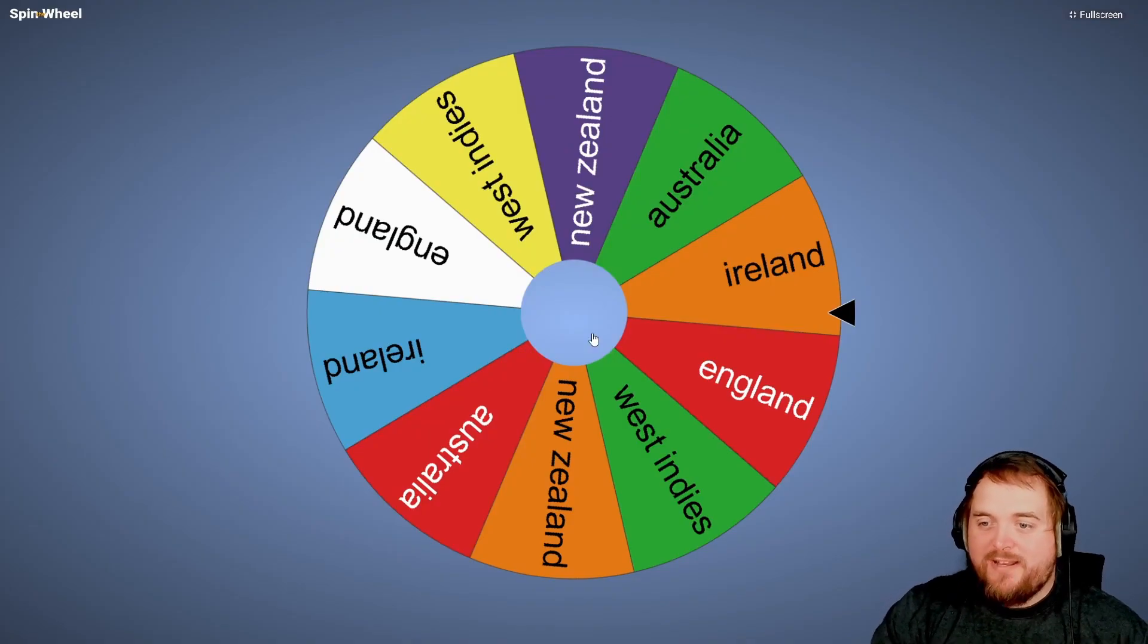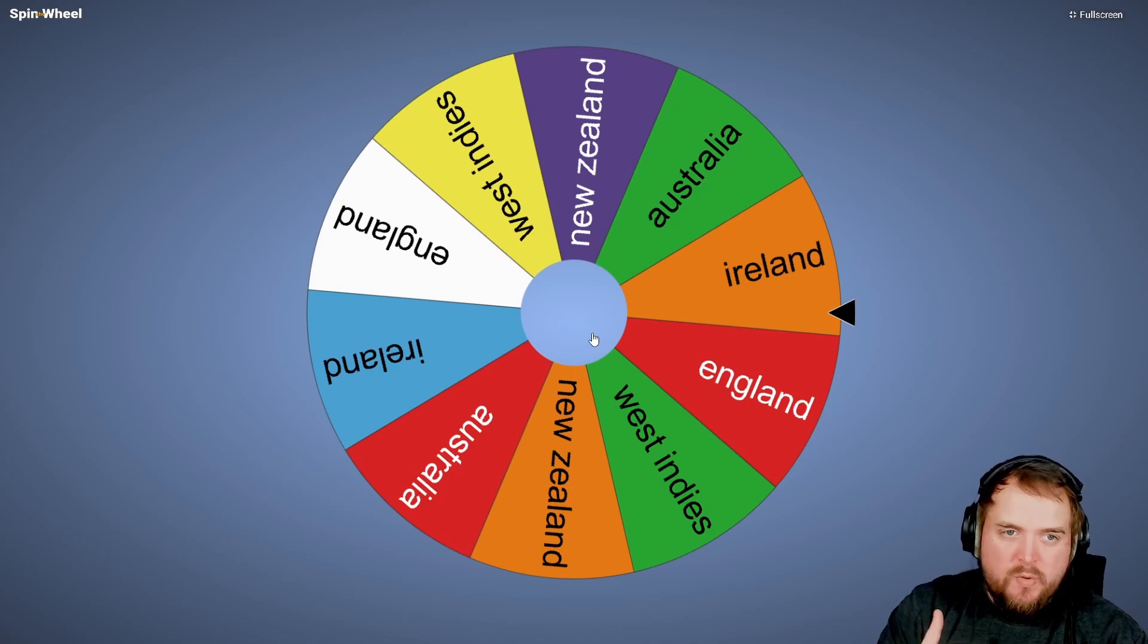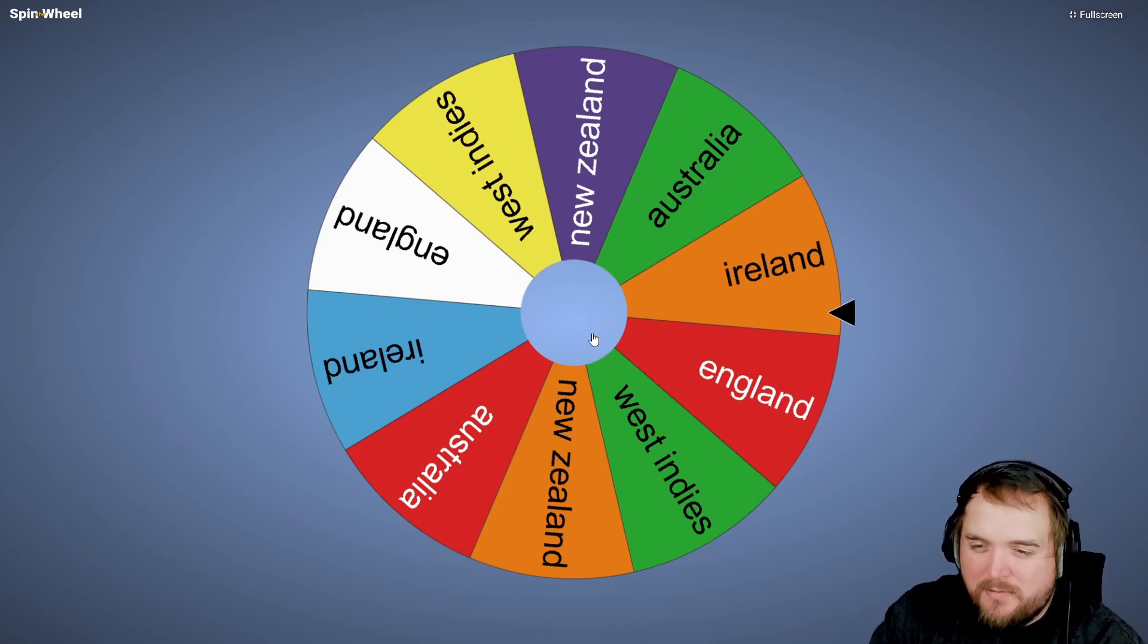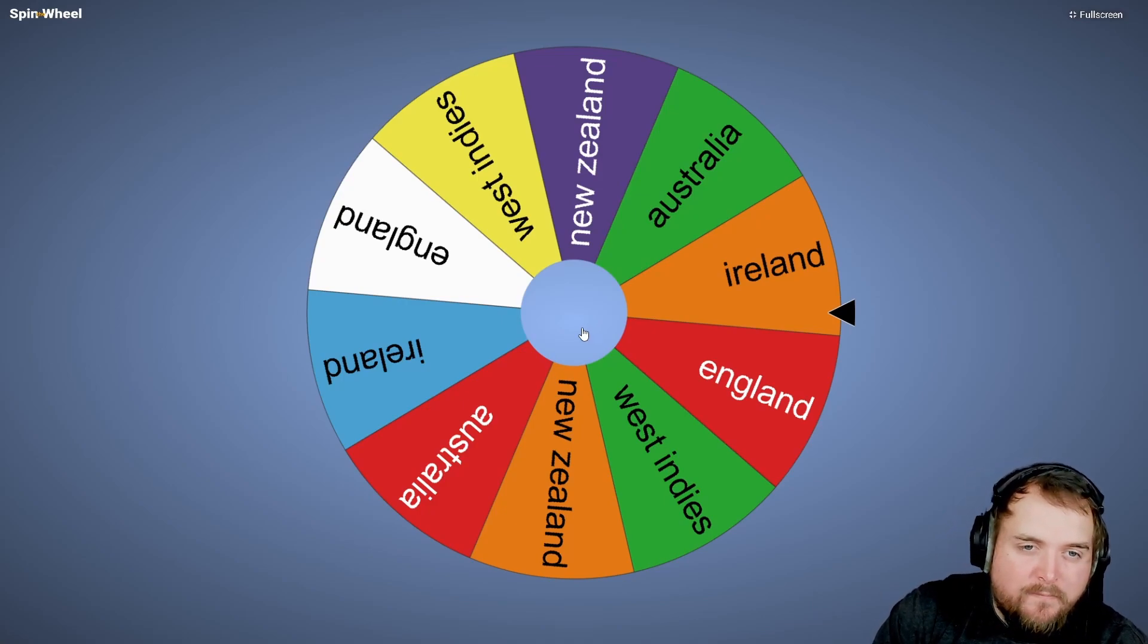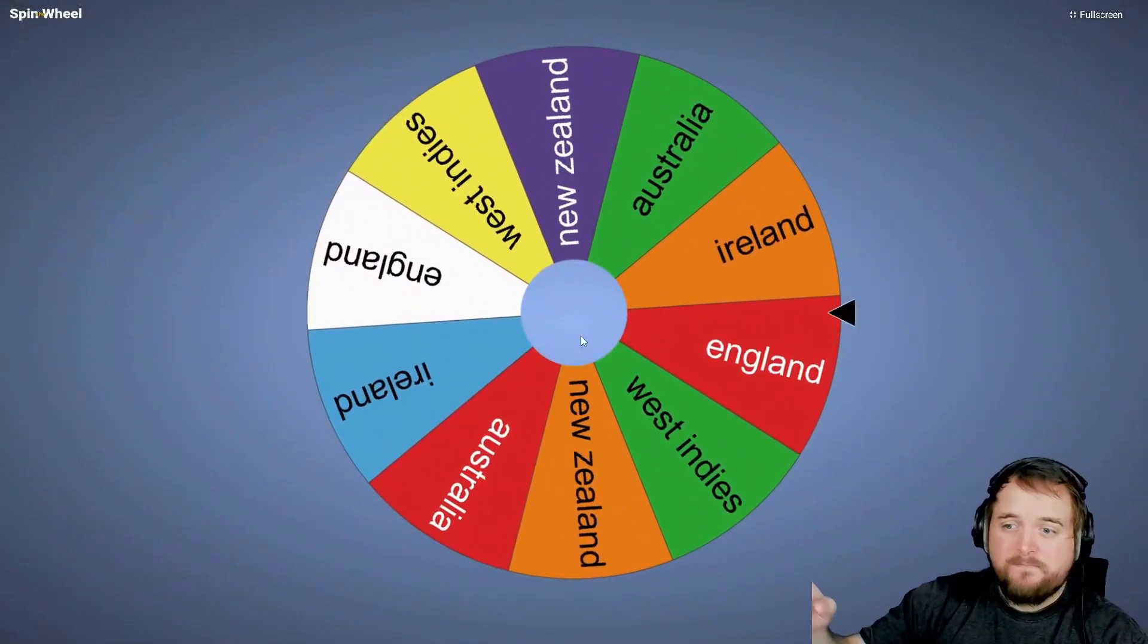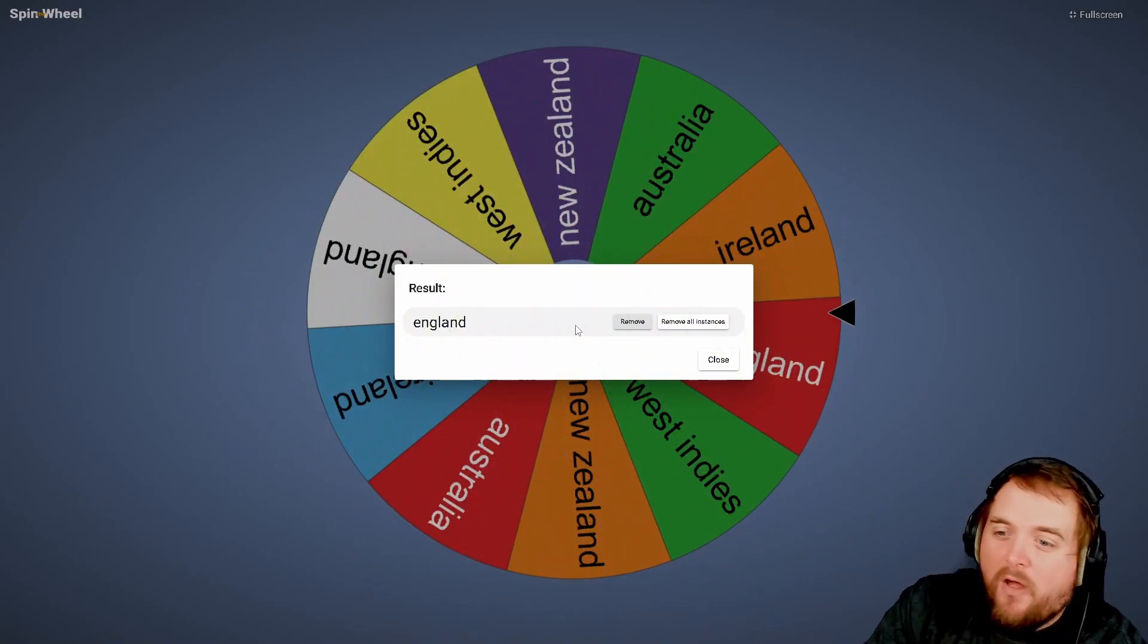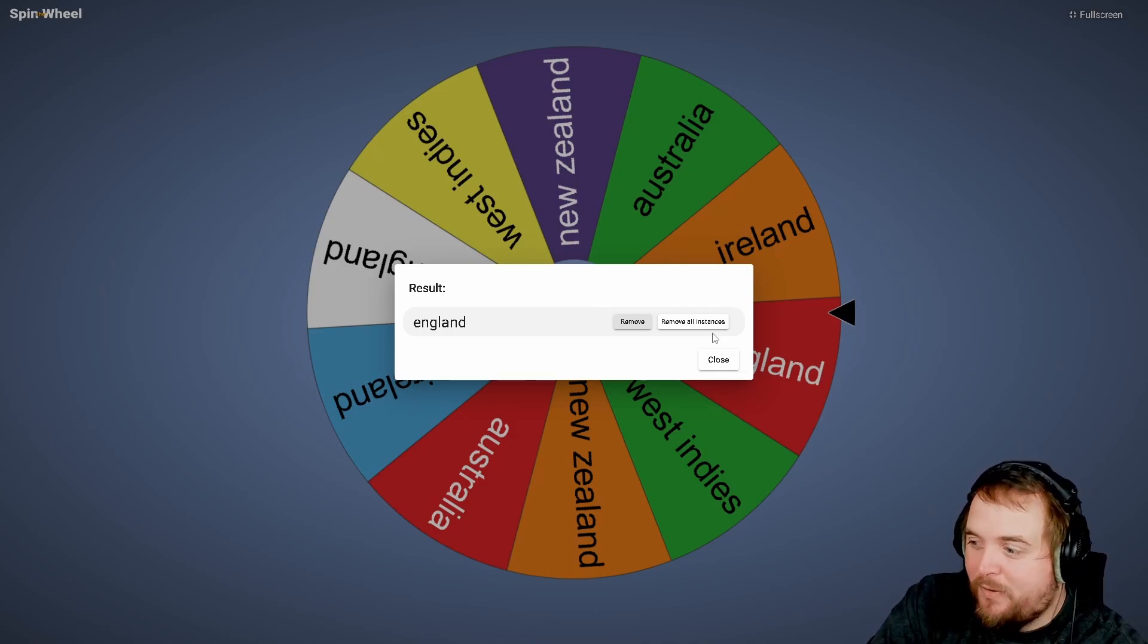We now need to find out what nation we are going to be from. I've only added the teams I definitely know are gonna be in the game. West Indies, New Zealand, Australia, Ireland, and England are the five teams that we're definitely sure we're gonna have licenses for. Let's spin the wheel and see who we get. I'm really hoping we don't get Australia. We get England again. I'm over the moon with that. I will take that.